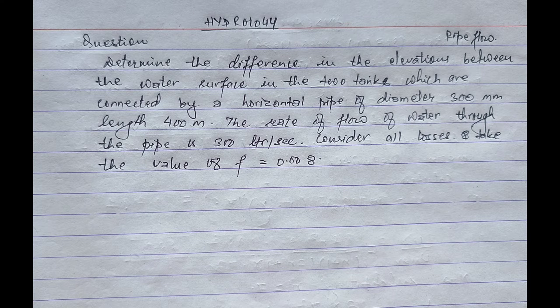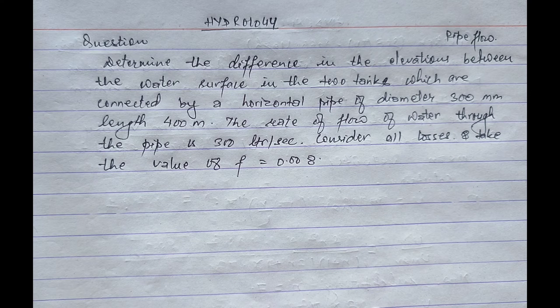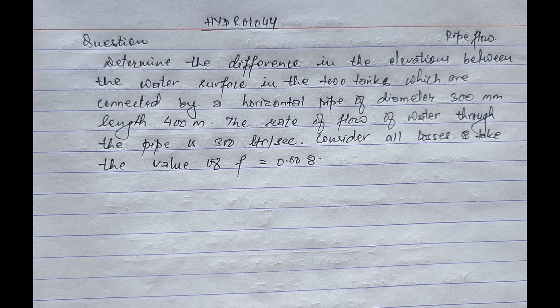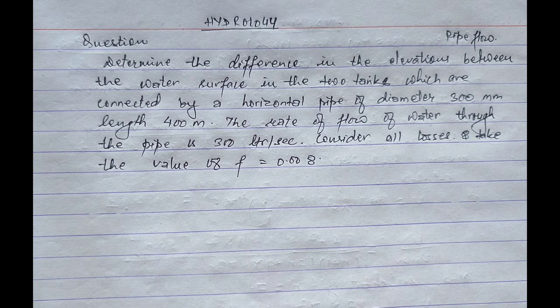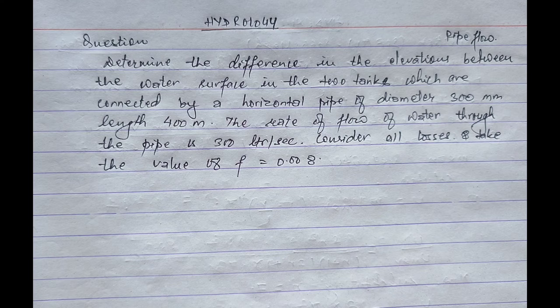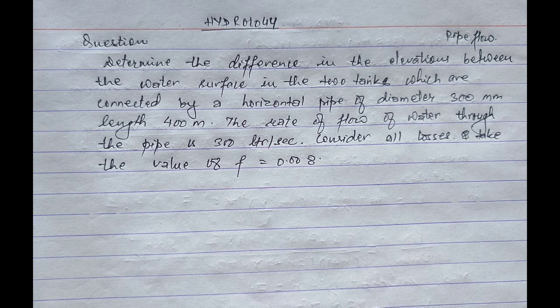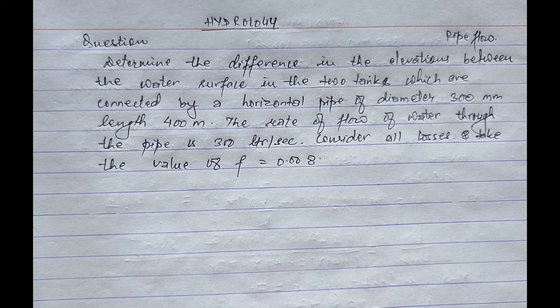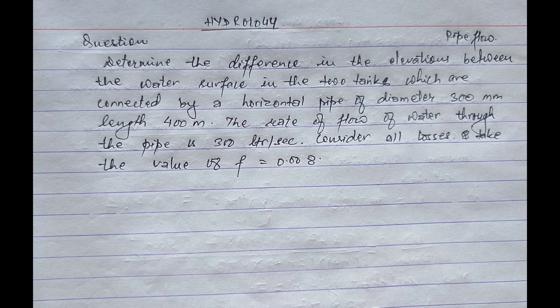Hello everyone, welcome to our channel. Today we will solve a numerical problem related to pipe flow. The given question is: determine the difference in the elevation between the water surface in the two tanks which are connected by a horizontal pipe of diameter 300 mm of length 400 meter. The rate of flow of water through the pipe is 300 liter per second.